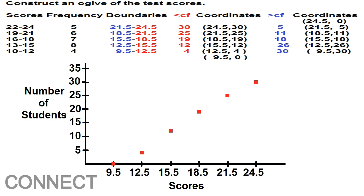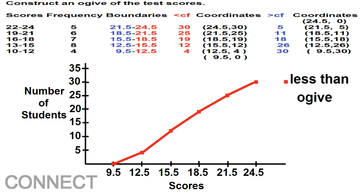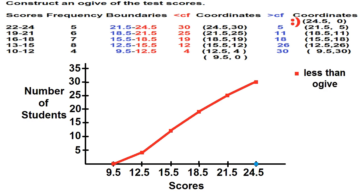Draw, plot, then connect. Connect the points to form the less than ogive. Now let's plot the points for the more than ogive. The number of students who got more than 24.5 is 0, more than 21.5 is 5, more than 18.5 is 11, more than 15.5 is 18, more than 12.5 is 26, and more than 9.5 is 30.